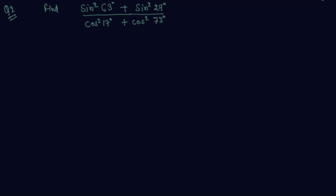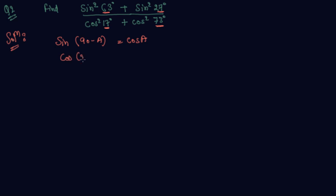Let me give you some more examples on trigonometric identities. Here is one more question. We are given sin²63 + sin²27 upon cos²17 + cos²73. As I told you in my previous lectures, there is a complementary relation between two trigonometric functions: sin(90° − a) = cos(a) and cos(90° − a) = sin(a). I will solve this question using these two formulas and the identity sin²a + cos²a = 1.